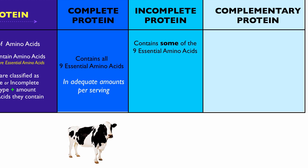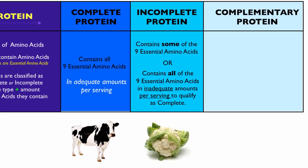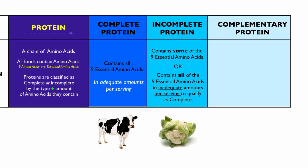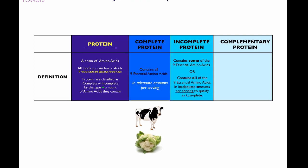An incomplete protein contains some of the nine essential amino acids but not all of them, or it contains all of the nine essential amino acids but in inadequate amounts per serving to qualify as complete. Cauliflower is classified as an incomplete protein — it does contain all of the nine essential amino acids, but it just doesn't have enough of them per serving to qualify as complete. However, if you ate enough of the cauliflower, it would be a complete protein.